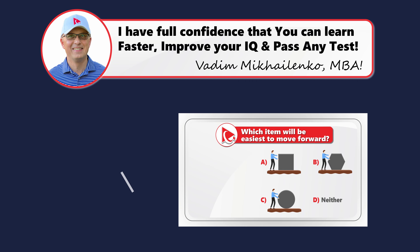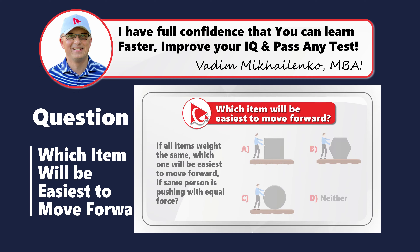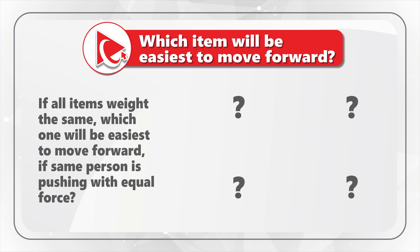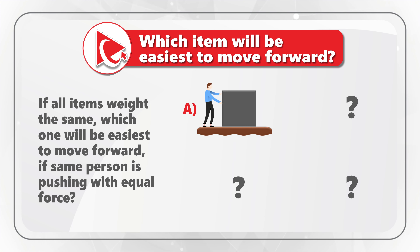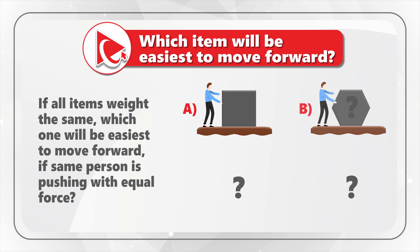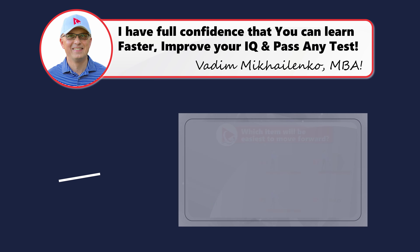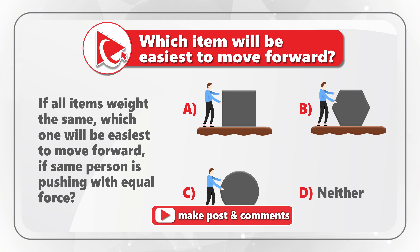Here's an amazing question to test your knowledge of mechanical movement of objects. You're presented with a picture of a person moving an object and you need to determine, if all objects weigh the same, which one will be easiest to move forward if the same person is pushing with equal force. You need to select one out of four possible choices: Choice A: person moving a cube. Choice B: person moving a hexagon. Choice C: person moving a ball. And last but not least: neither one.